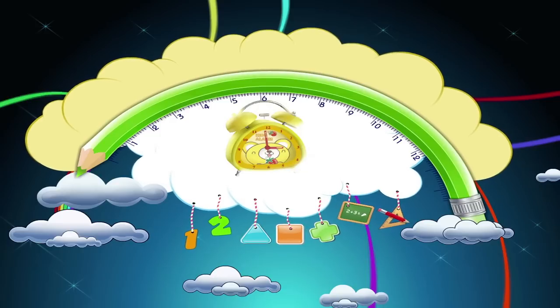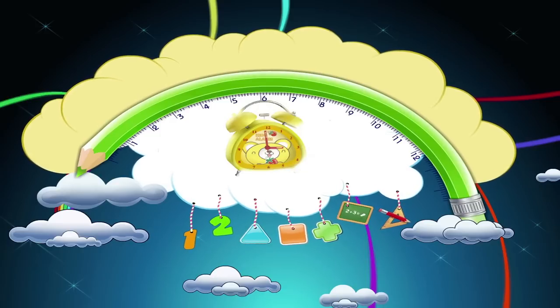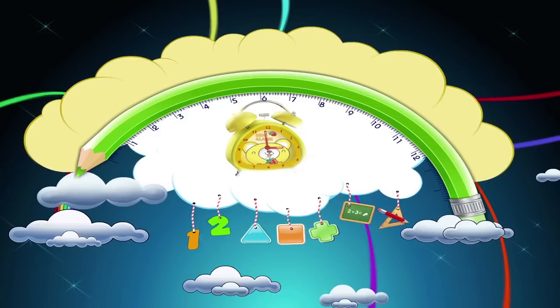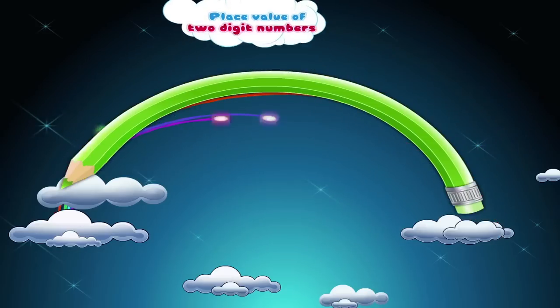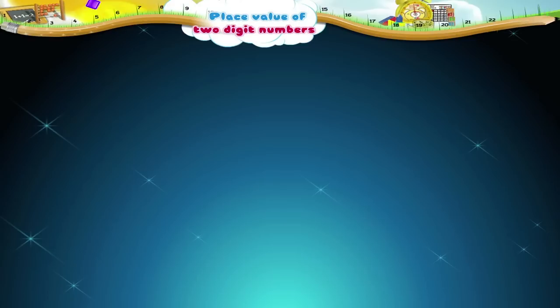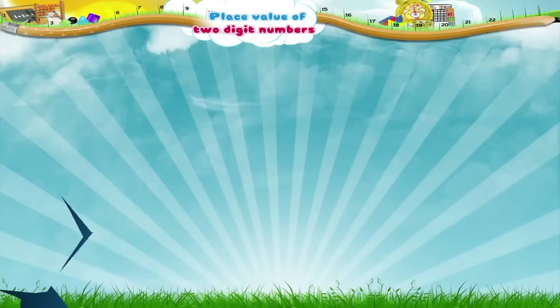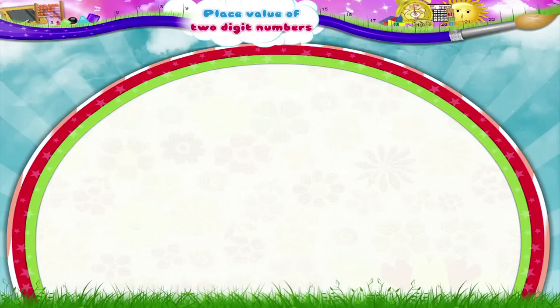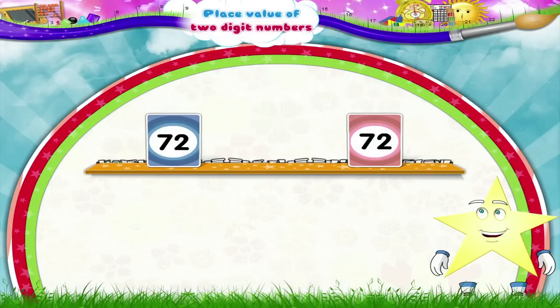Place Value of Two-Digit Numbers. Can you read the number shown here? The number is 72. Let us see what happens if we change the position of the digits. Now the number is 27.